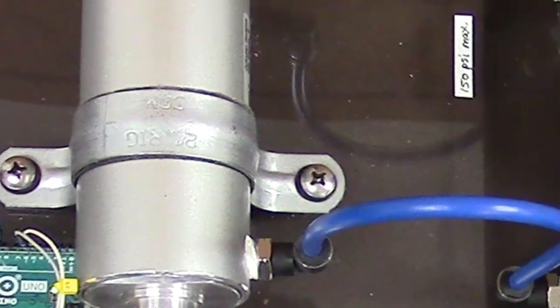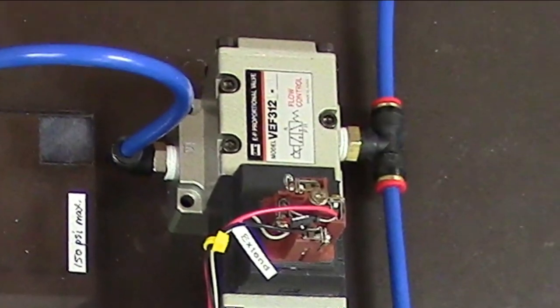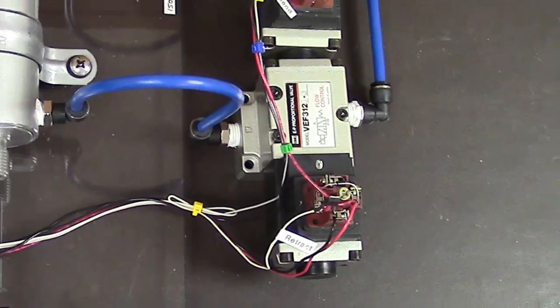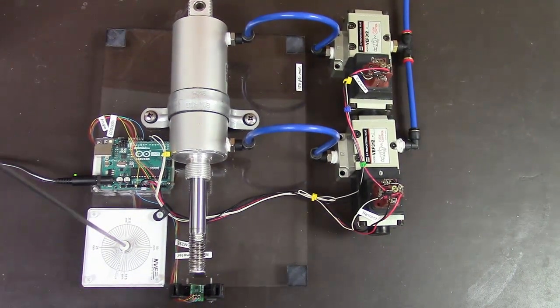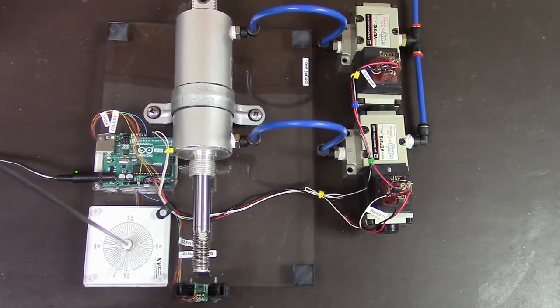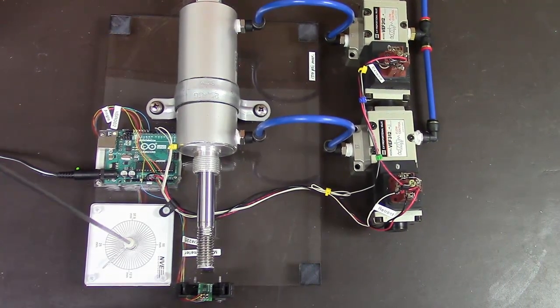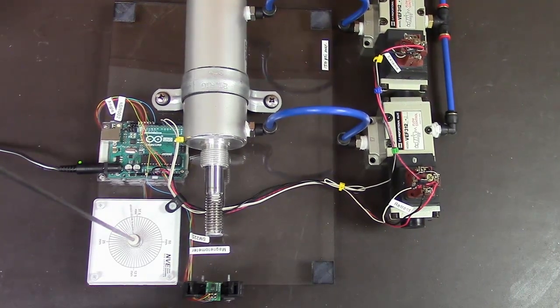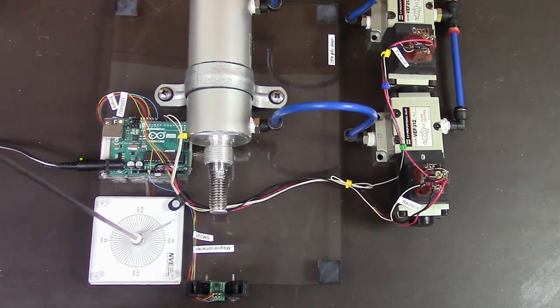We have two proportional flow control valves, one to extend the cylinder and one to retract. The angle sensor detects the rotation of a magnetic knob and sets the desired position. With this control system, the cylinder moves smoothly and holds steady.